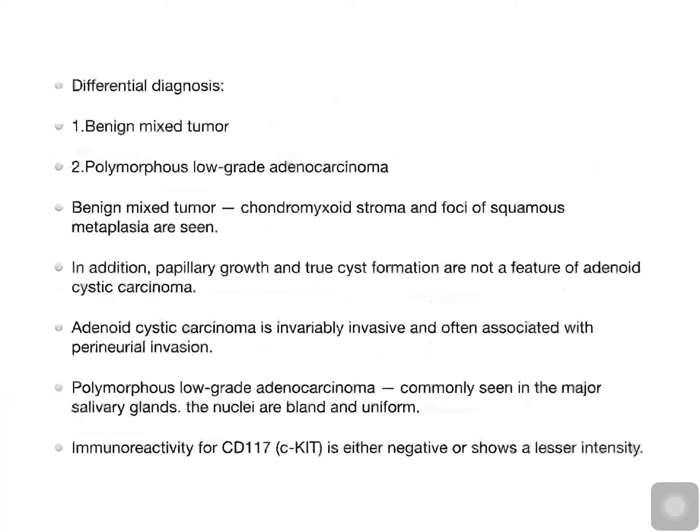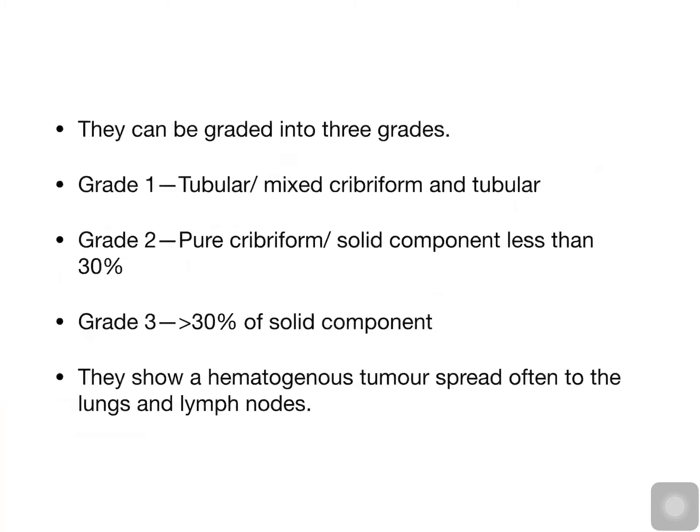Polymorphous low-grade adenocarcinoma is commonly seen in the major salivary glands. The nuclei are bland and uniform, and immunoreactivity for CD117 is either negative or shows lesser intensity. These tumours can be graded into three grades: Grade 1 has tubular or mixed cribriform and tubular patterns; Grade 2 is pure cribriform or solid component with less than 30%; Grade 3 is when there is more than 30% of solid component.